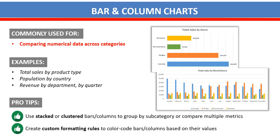Here are two tips for bar and column charts. First, we'll use stacked or clustered bar/column charts to group categories and subcategories for comparing multiple metrics. Second, we'll create custom formatting rules to color-code bars or columns based on their values — for example, selecting data by subcategories like bi-monthly or by genre, and taking sales totals by genre and by month.